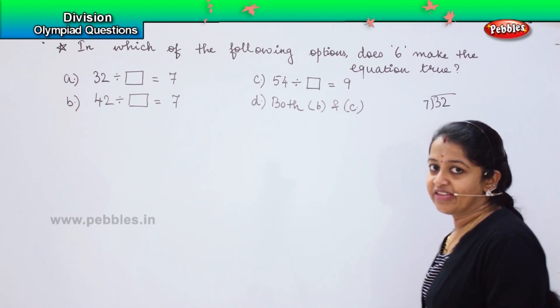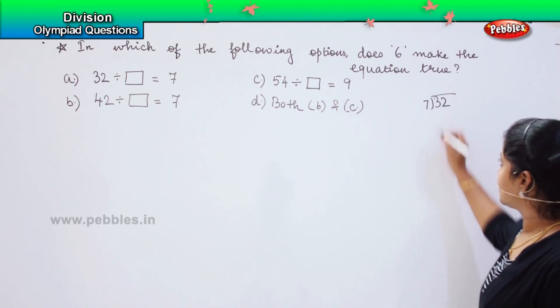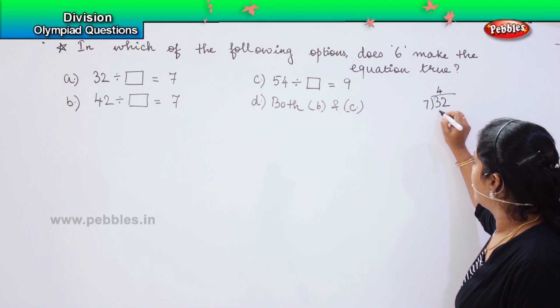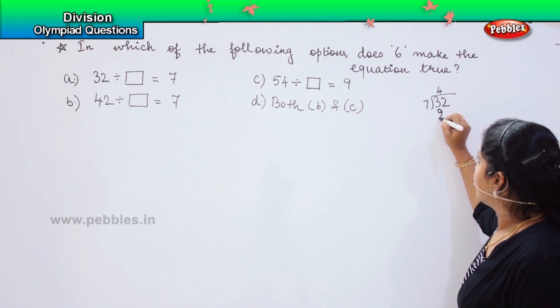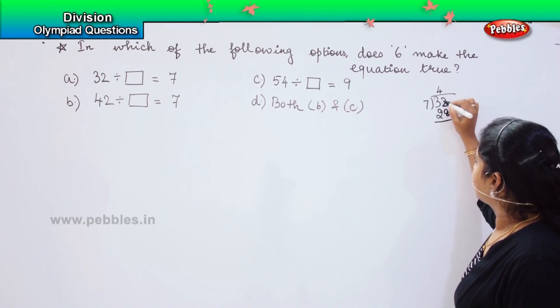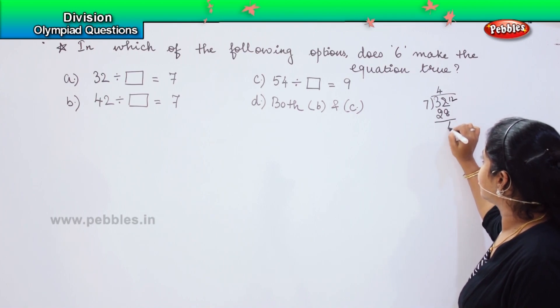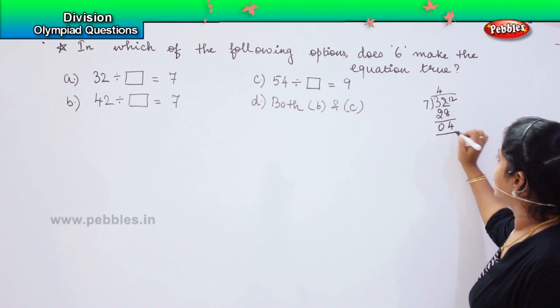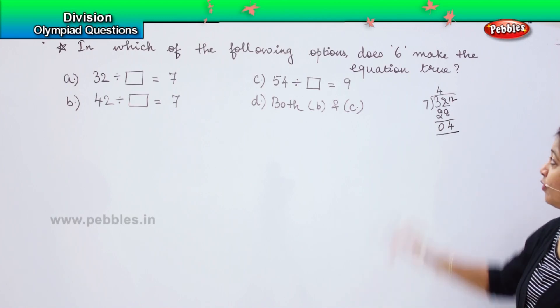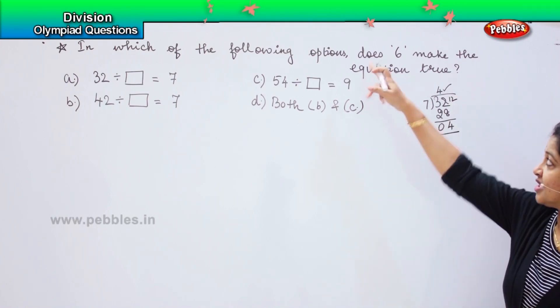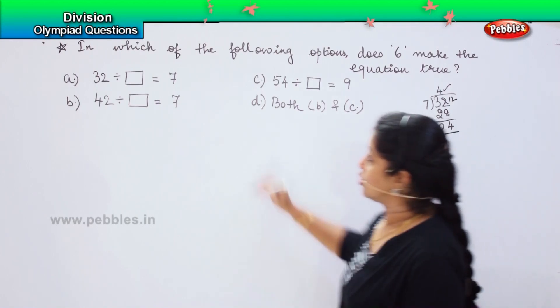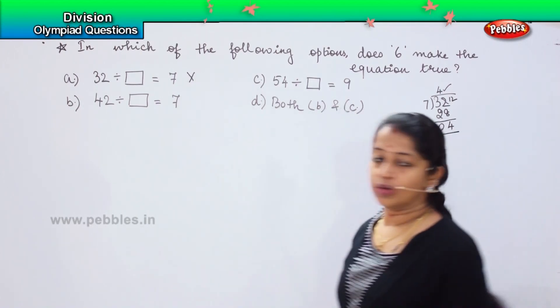What is 7 into 4? 7, 4 is 28. So 4 and here it becomes 28. 12 minus 8 is 4 and this is 0. Which means I am having a remainder of 4 and my quotient is also 4. Does it stand true here? No. This option is ruled out.